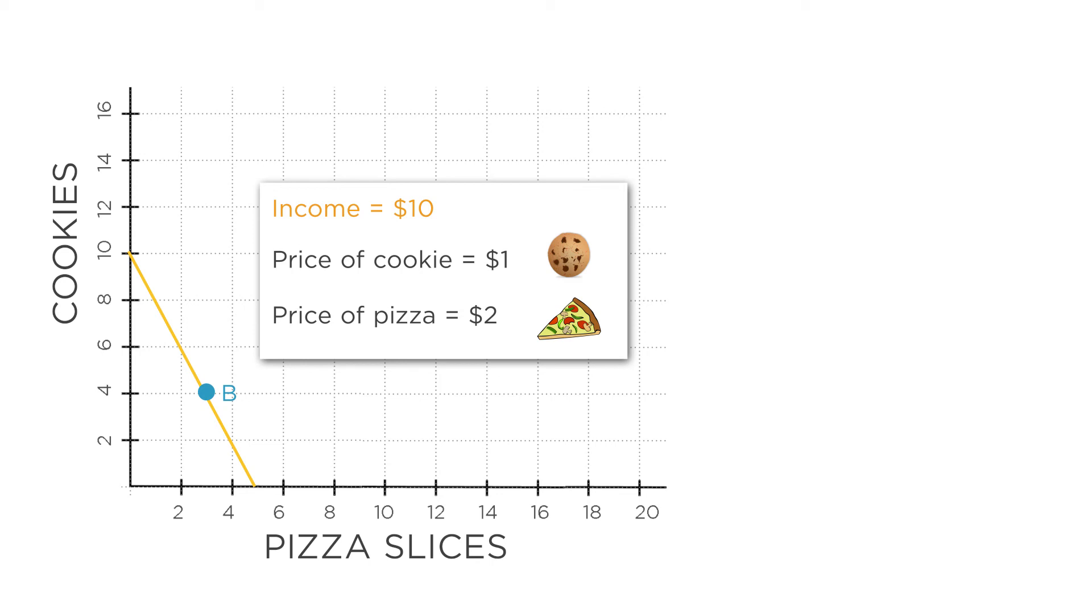This opportunity cost is represented by the price ratio. Suppose that the price of pizza is x. Suppose the price of cookies is y. Then to get one more pizza, you need to give up x over y cookies. In this case, the price of pizza is $2 and the price of cookies is $1. So to get one more pizza, you need to give up $2 over $1 equals two cookies.